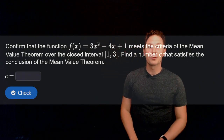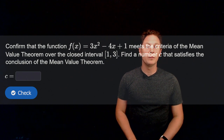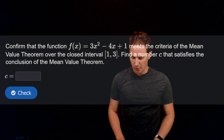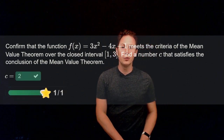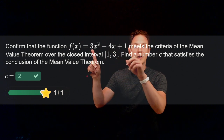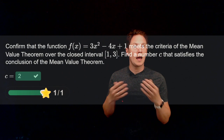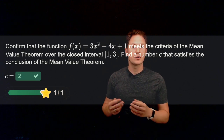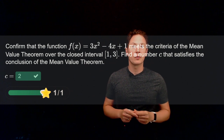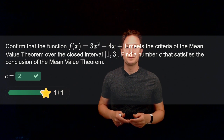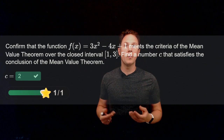Let's solve some problems. Confirm that f(x) = 3x² - 4x + 1 meets the criteria of the mean value theorem over the closed interval [1, 3], then find the number c that satisfies the conclusion. This is a polynomial function, which is differentiable everywhere, so it is continuous on the closed interval [1, 3] and differentiable on the open interval (1, 3). Both criteria of the mean value theorem are satisfied.